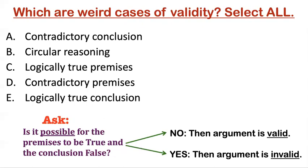How do you find the weird cases? Here's a decision procedure: ask yourself, is it possible for the premises to be true and the conclusion false? This is definition number two of validity. If it is possible, then we know the argument is invalid. If it is not possible, then we know the argument is valid — because definition number two says it's impossible for the premises to be true and the conclusion false.